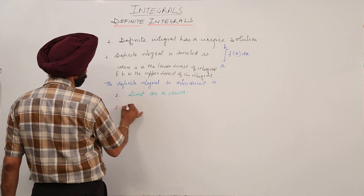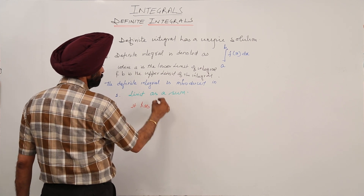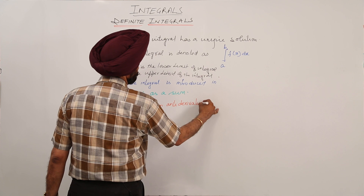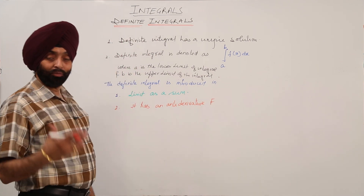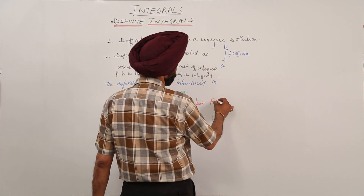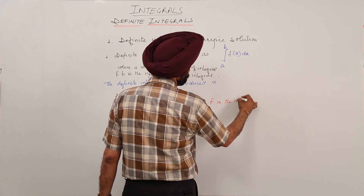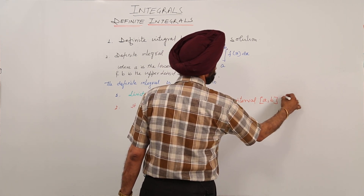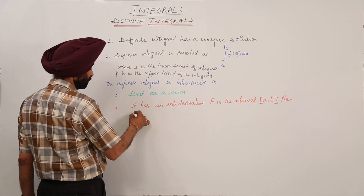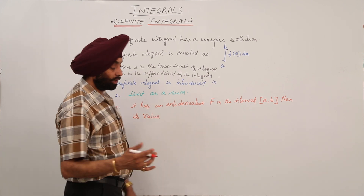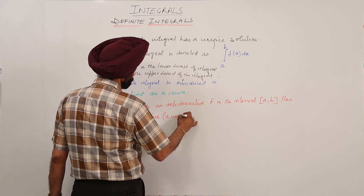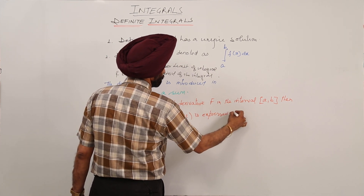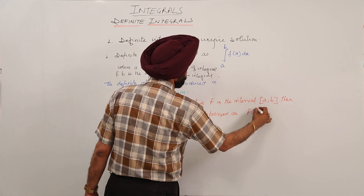Number two: the definite integral has an antiderivative, capital F, in the closed interval [A, B]. Then its unique value is expressed as F(B) minus F(A).